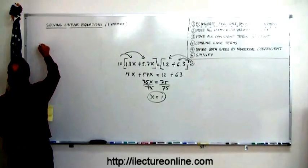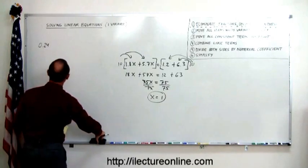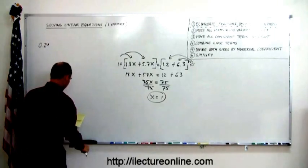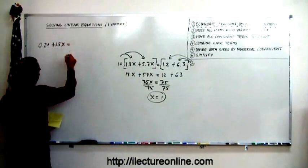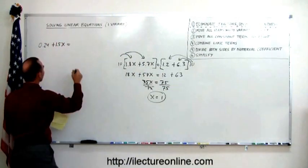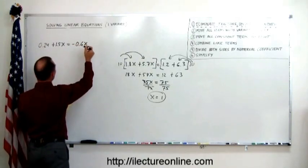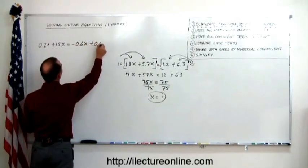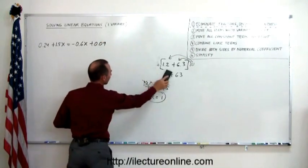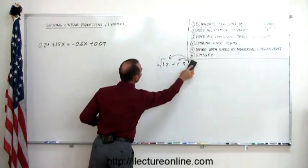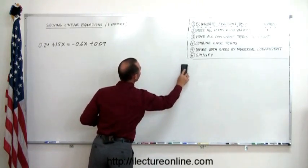How about this problem? 0.24, read that little dot there so we don't get confused, plus 1.5x equals minus 0.7x minus 0.6x, plus 0.09. And let me get rid of this number, this problem right here. So we're not cramped too tightly. It's cleaner.